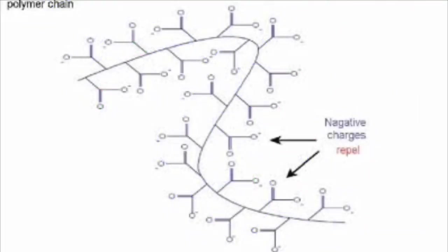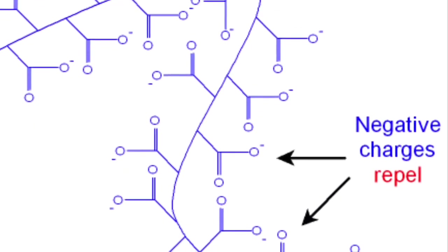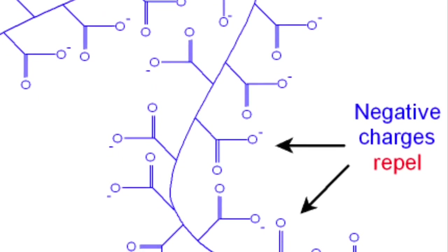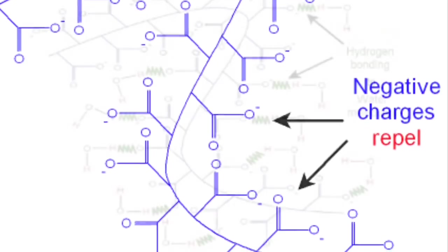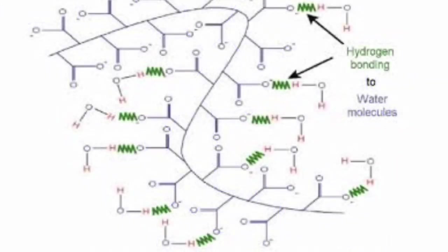However, although we have seen how these polymers absorb water, how does it physically expand? As explained previously, the carboxyl groups down the length of the polymer are negatively charged. Thus, they repel each other, and the polymer chain begins to unfold. As it expands, further unreacted COOH and Na groups are exposed to the water molecules, beginning a chain reaction.